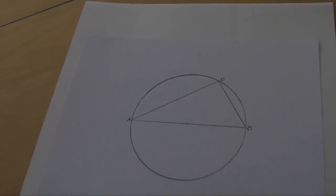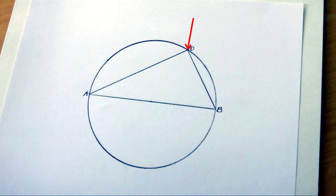According to Thales' theorem, no matter where D is located on the circumference, angle ADB will always be 90 degrees.